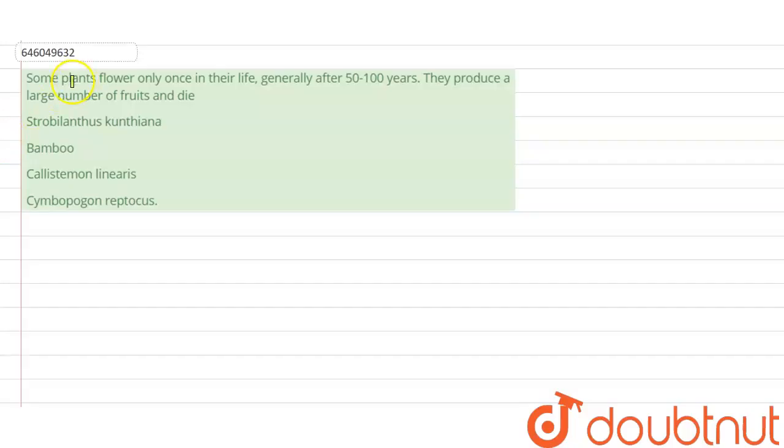Hello everyone, we have a question here. Some plants flower only once in their life, generally after 50 to 100 years. They produce a large number of fruits and die.